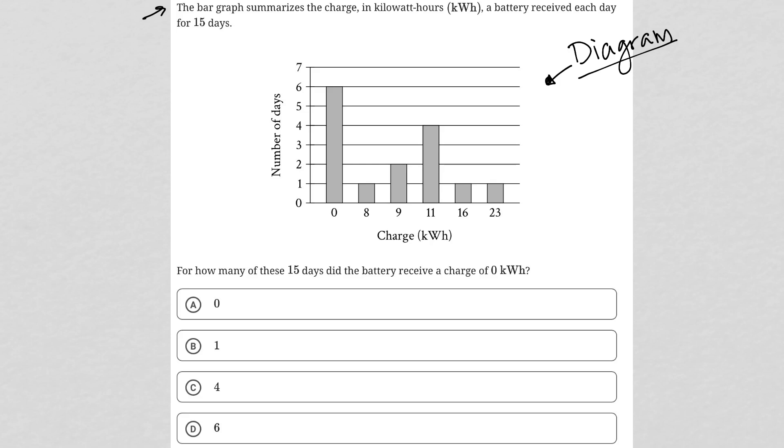For how many of these 15 days did the battery receive a charge of zero kilowatt hours? Well, the zero kilowatt hours is here in the first bar. It matches up with six days, and therefore six must be the correct answer, which is choice D.